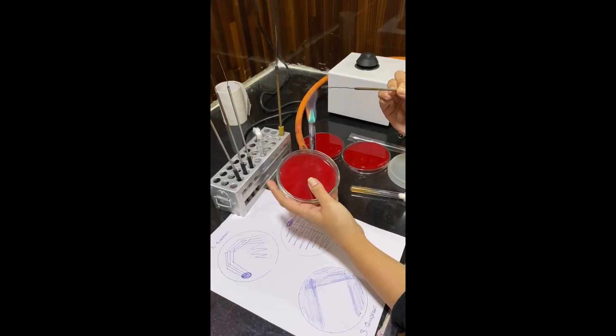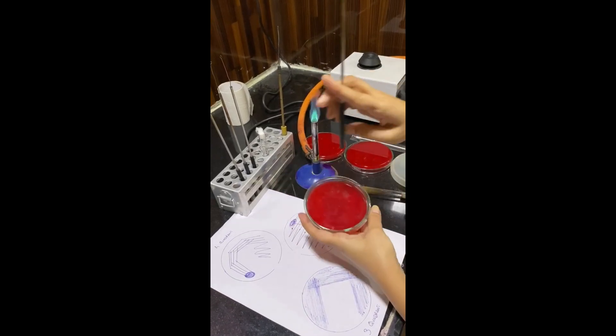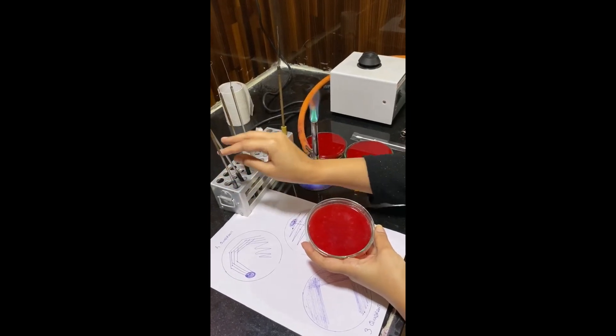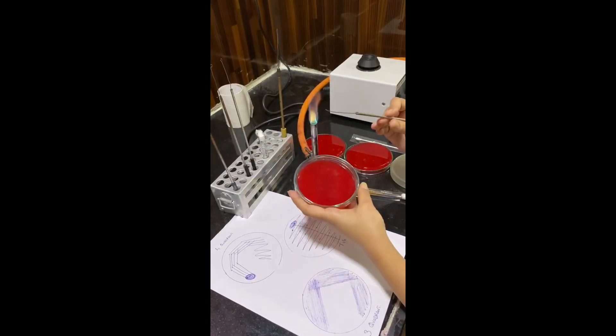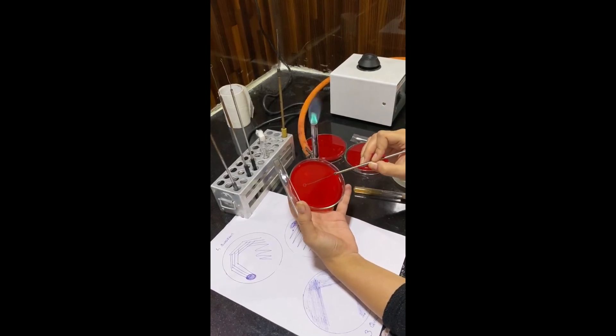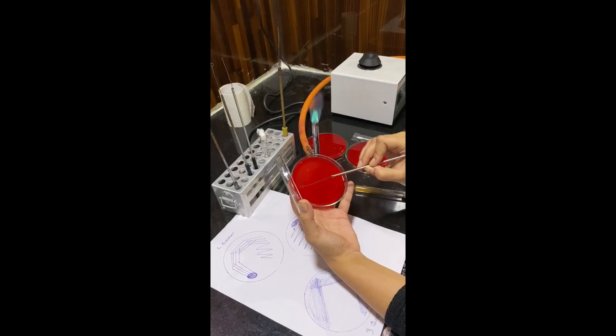Close the lid. Tilt it. You either sterilize the loop or use another sterile loop. Now the secondary streaking should start from the end of the primary streaking. In this manner. Care should be taken that it should be done smoothly and slowly.